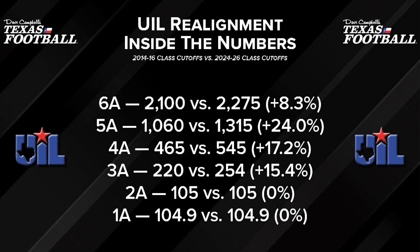They don't choose these numbers willy-nilly — they choose them based on being able to divide schools into relatively even classifications. They want a relatively even number of teams in each classification. For example, coming up this year in 6A there are going to be 247 schools, in 5A 250, then 204 in 4A, 201 in 3A, and 206 in 2A. You want each team to have a pretty fair chance to get into the playoffs, and there is a cap on district size.